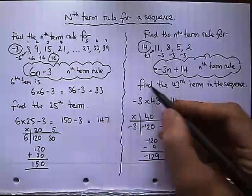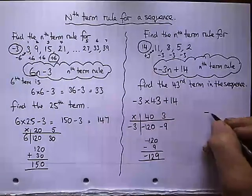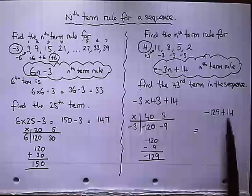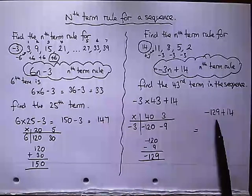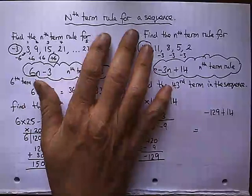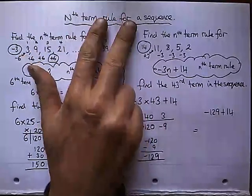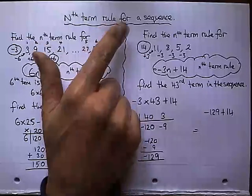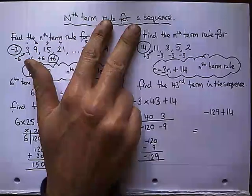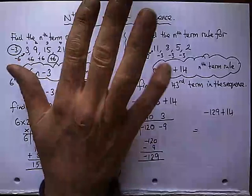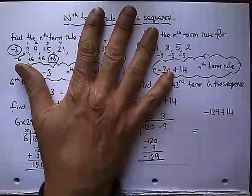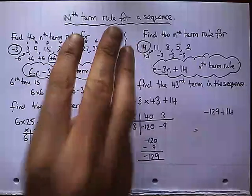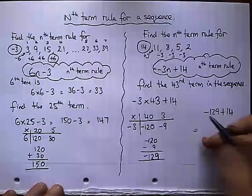But if I keep taking off 9 from a minus 120, I get to minus 129. So I've got minus 129 for this bit over here. And then I need to add 14. So minus 129 plus 14 equals, well, let's just count up 14 from minus 129. So minus 128, minus 127, minus 126, minus 125, minus 124, minus 123, minus 122, minus 121, minus 120, minus 119. And then I've got to do four more. Minus 118, minus 117, minus 116. So the answer is minus 115.